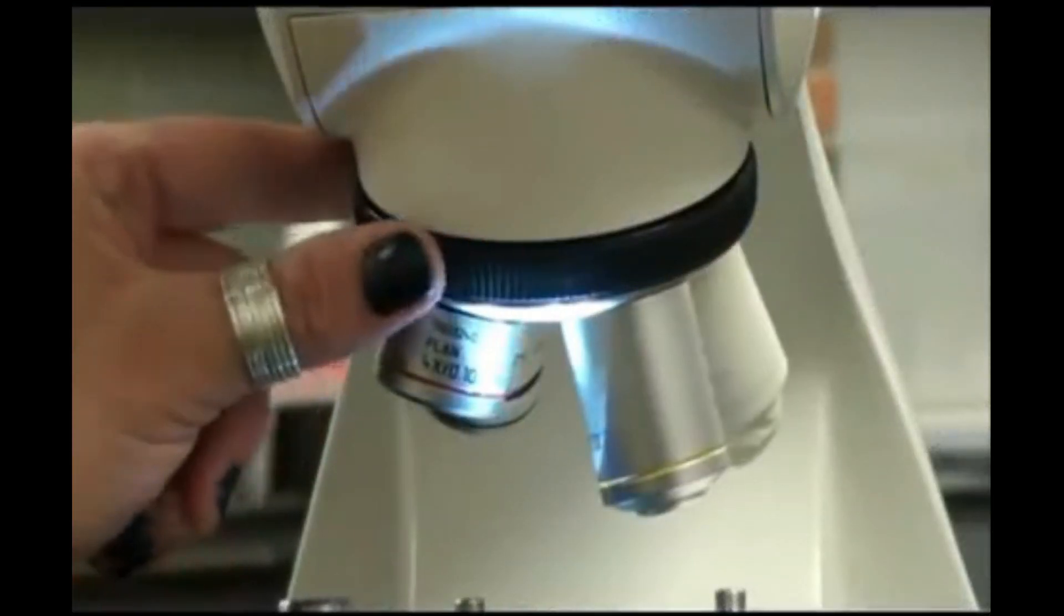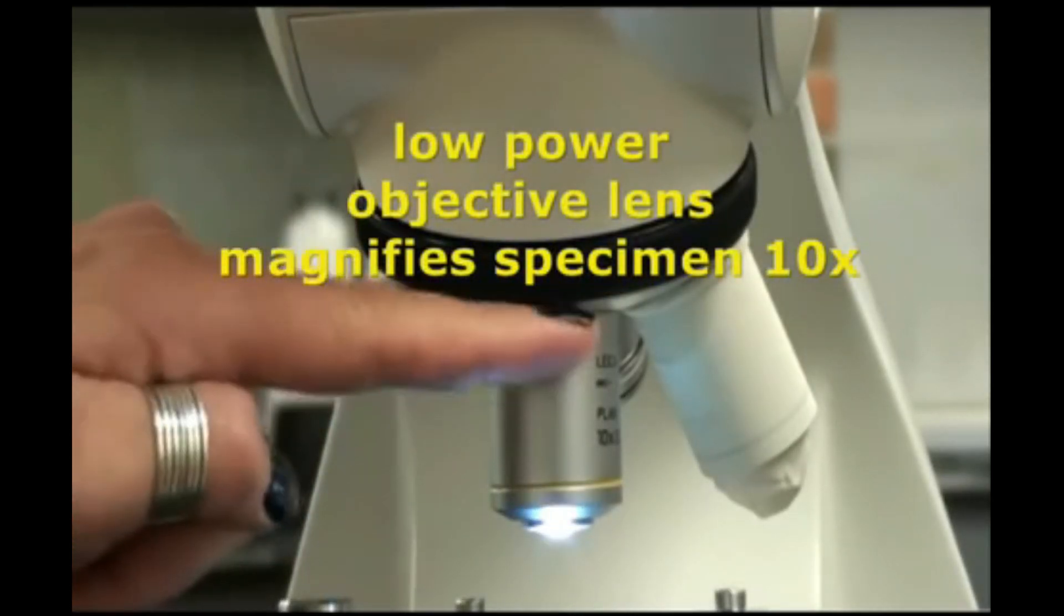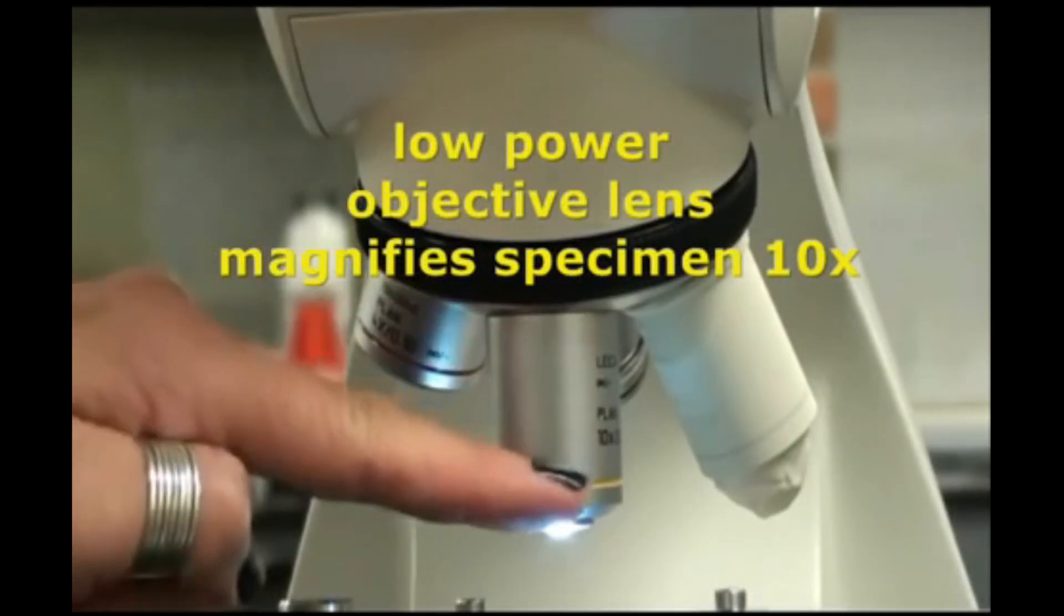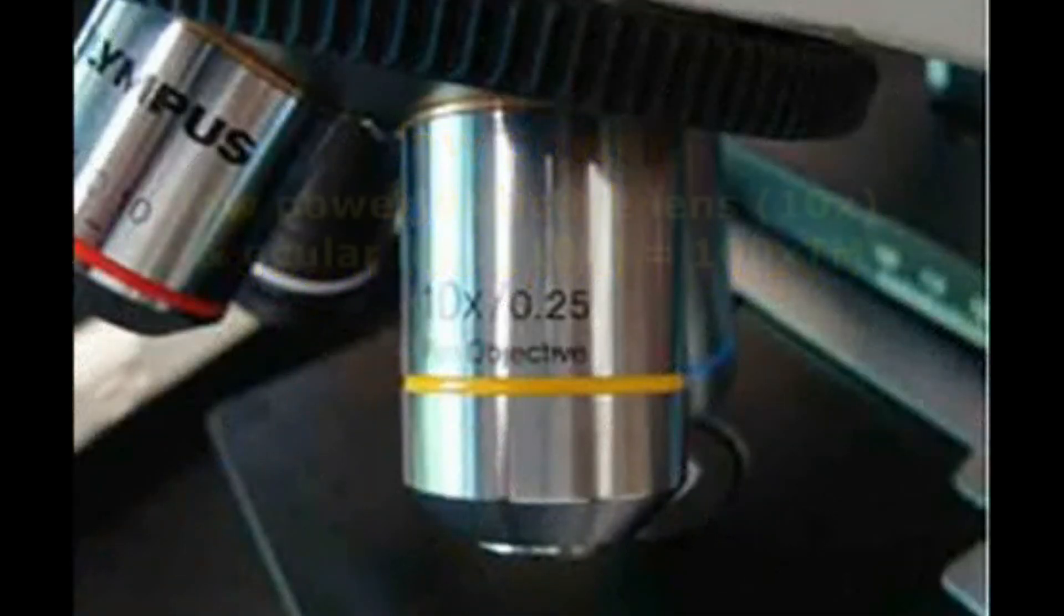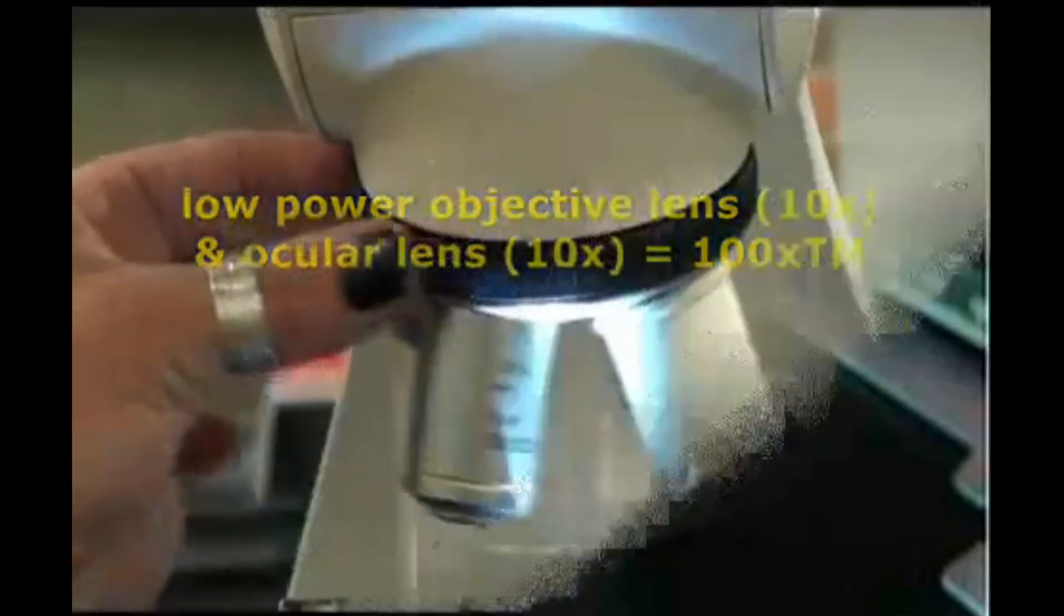The next objective lens is the low power lens. It has a yellow band around it and it magnifies objects ten times actual size. So the total magnification when using my low power lens is the ocular, which is ten times, for a total magnification of one hundred times actual size.